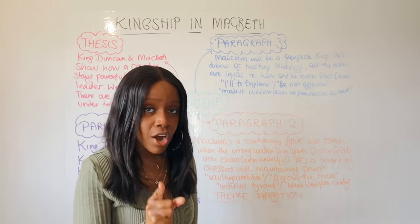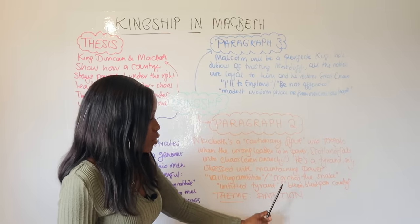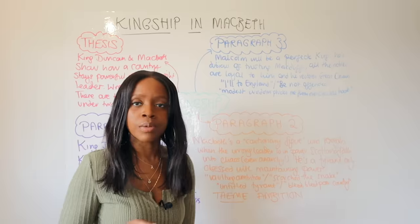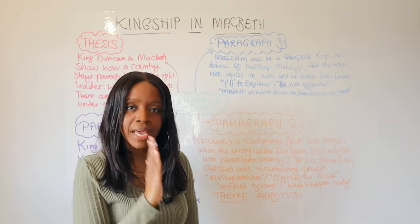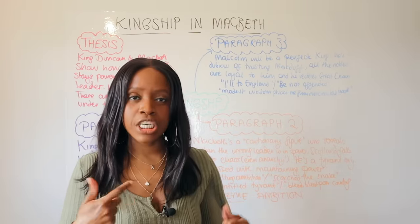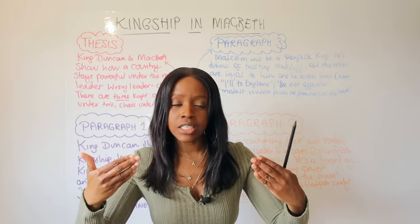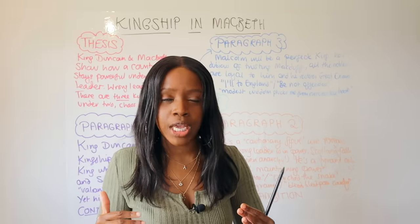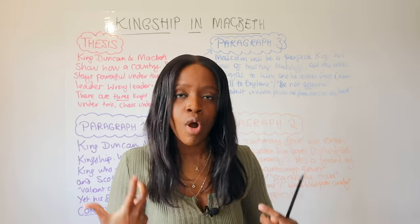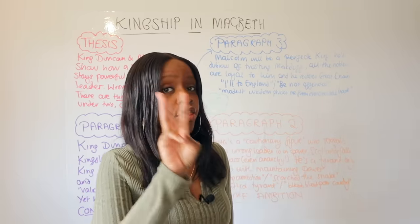Further evidence that Macbeth is the wrongful king comes from what Macduff says in Act Four, Scene Three, calling him 'an untitled tyrant' and declaring 'bleed, bleed, poor country' as a result of his wrongful leadership. When writing about Macbeth you can also tie in the theme of ambition - Shakespeare illustrates that ambition is a very corrupting force, triggering people to subvert the great chain of being. This not only corrupts them and causes their downfall, but also leads a powerful country like Scotland to fall into chaos.